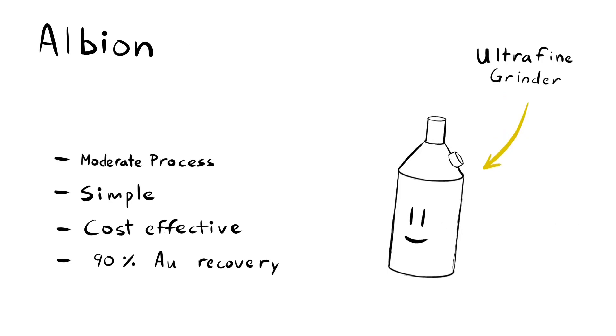Option three is the Albion process. This method promotes oxidation through ultrafine grinding.